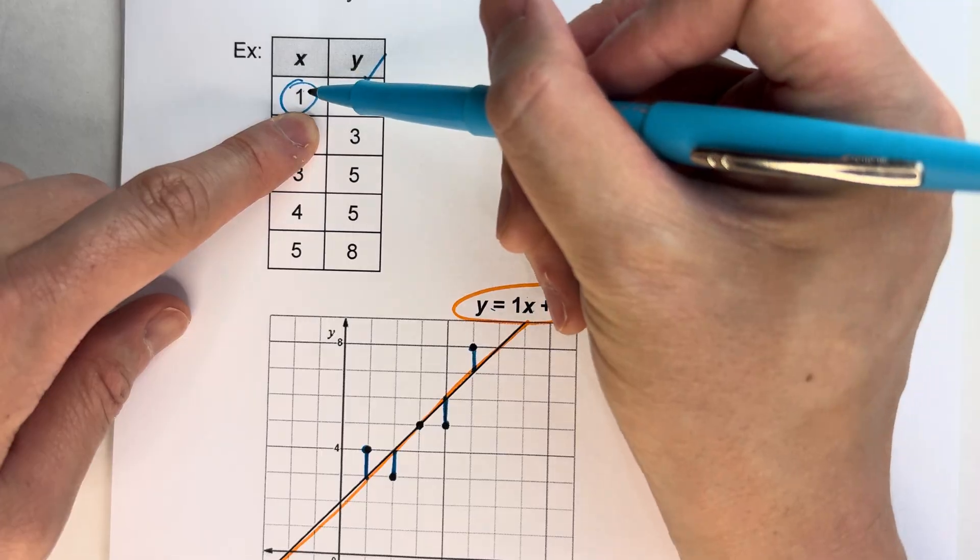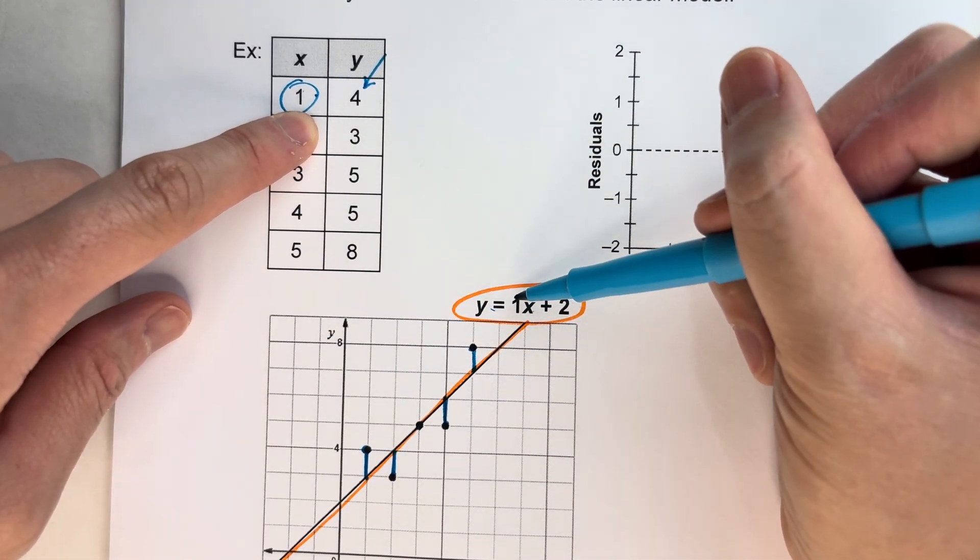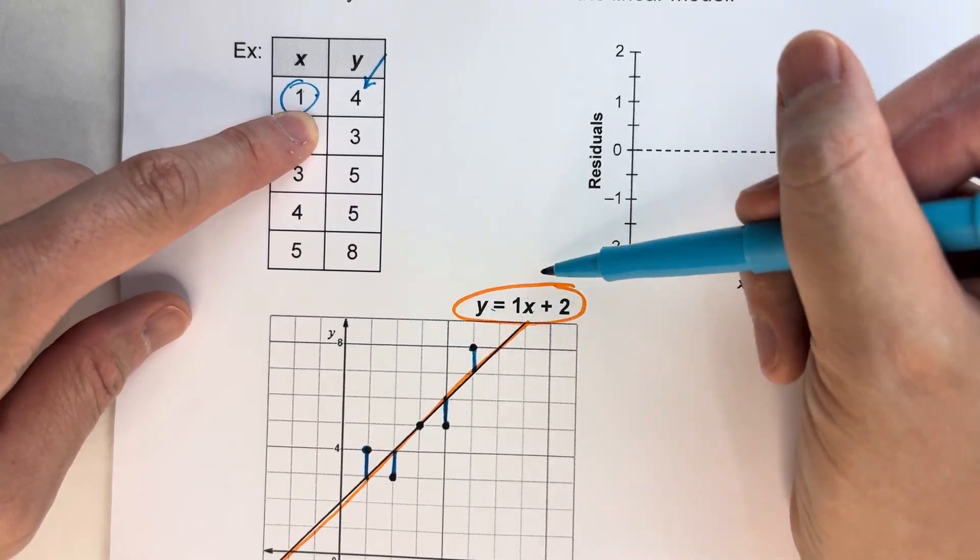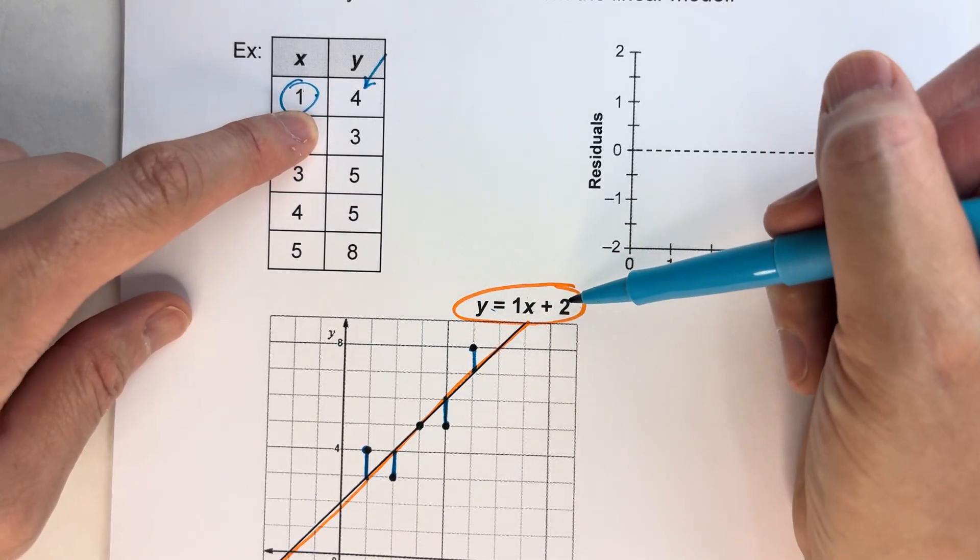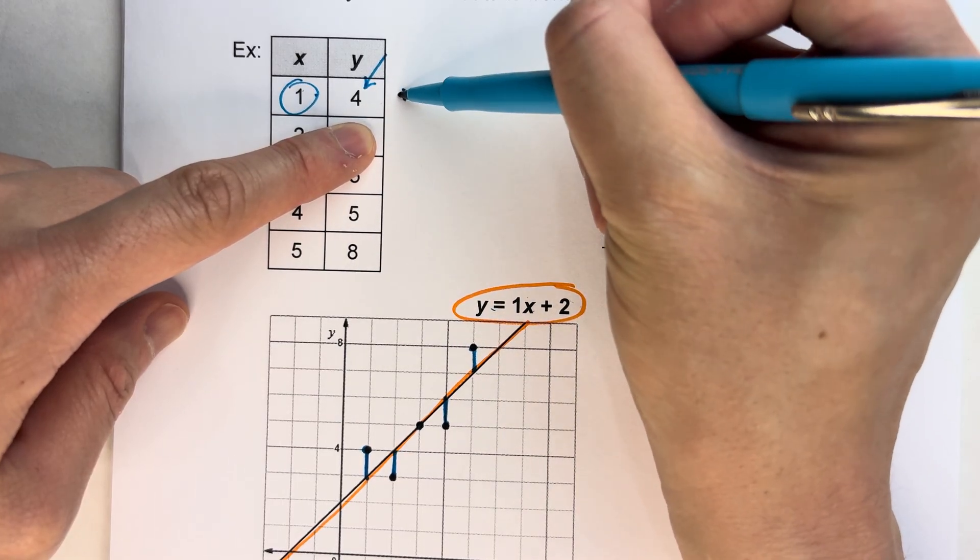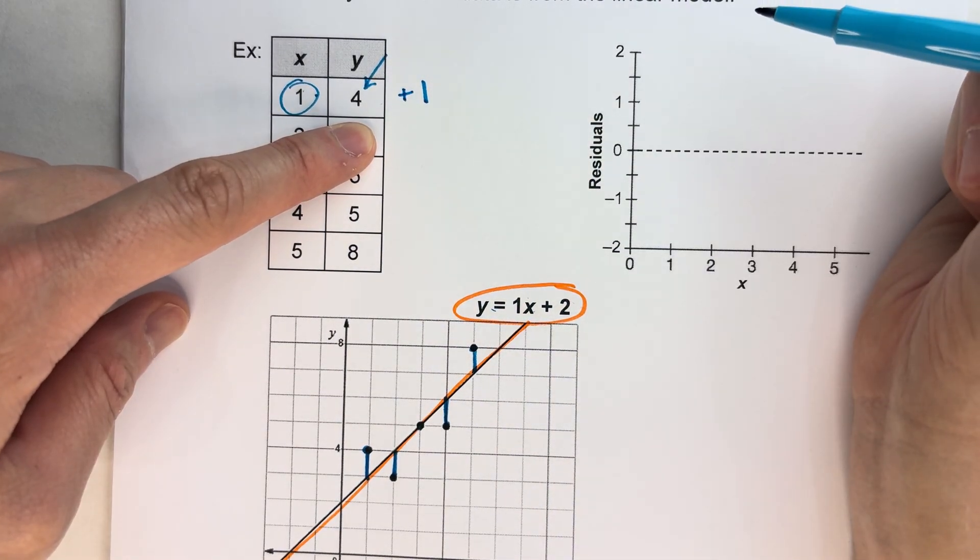So for example, 1. If I plug 1 into this equation, 1 for x, 1 times 1 is 1 plus 2 is 3. So I predicted I would get 3, but I actually got 4. So my actual number was 1 above what I expected it to be.